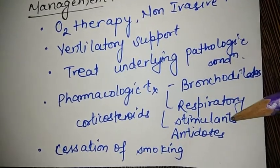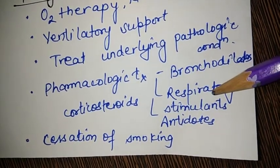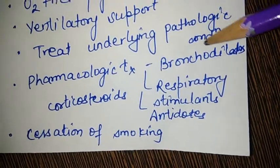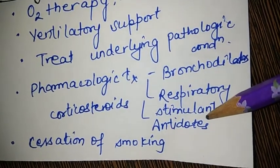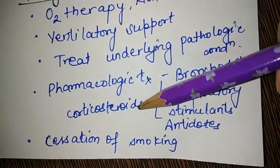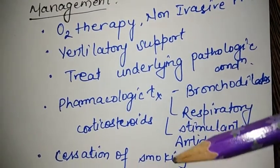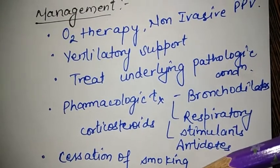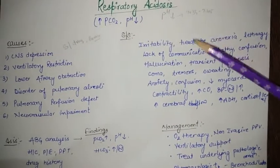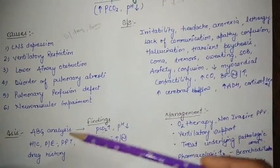Respiratory stimulants used include medroxyprogesterone and acetazolamide, which is a diuretic that decreases workload on the heart. Theophylline is used to increase diaphragmatic strength. Other drugs include corticosteroids. Patients should also be advised to stop smoking, since smoking leads to impaired gas exchange. This concludes the management of respiratory acidosis, summarizing the causes, signs and symptoms, diagnosis, and management.